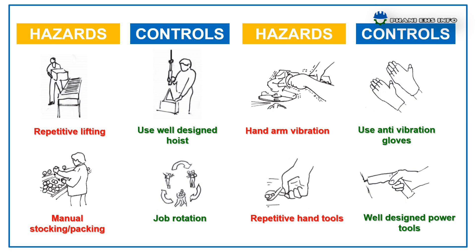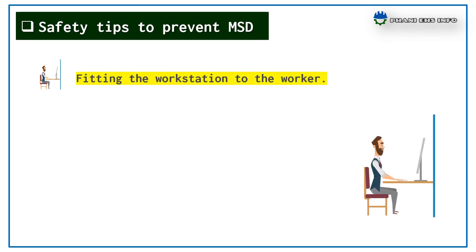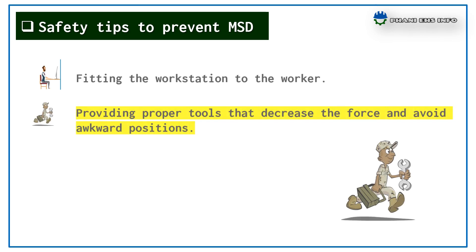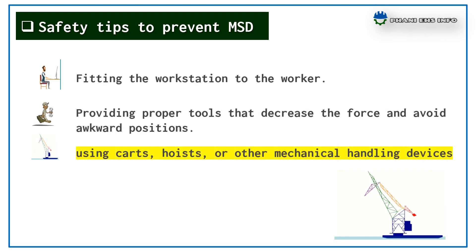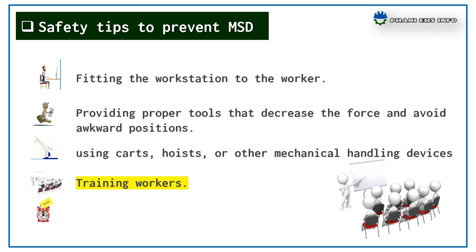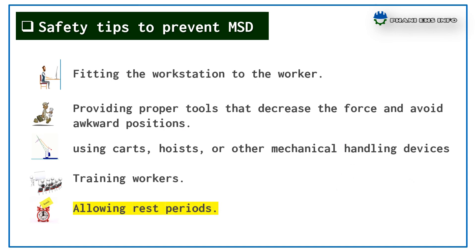These are some hazards and controls of Musculoskeletal Disorders at the workplace. Some safety tips to prevent MSDs at the workplace: fit the workstation to the worker; provide proper tools that decrease force and avoid awkward positions; use carts, hoists, and other mechanical handling devices; provide proper training to the worker; and allow rest periods.